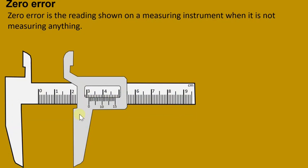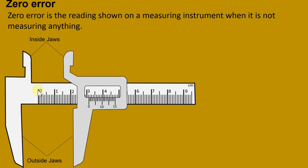Let's look at this Vernier caliper, which you know from previous lessons. These jaws are called the inside jaws, and these jaws here are called the outside jaws. This scale which runs from zero up to nine, marked in centimeters, is called the main scale. This scale which runs from zero to 15 is called the Vernier scale.